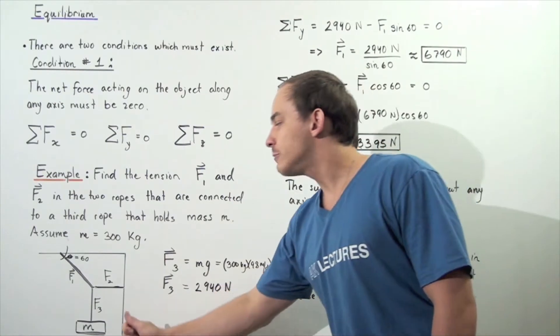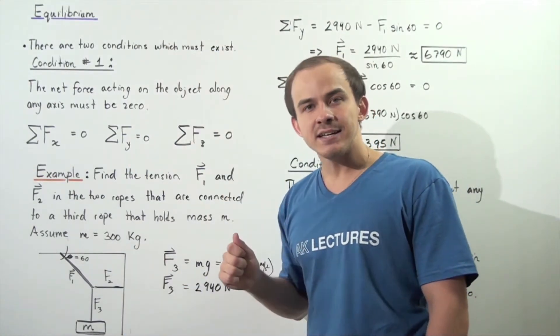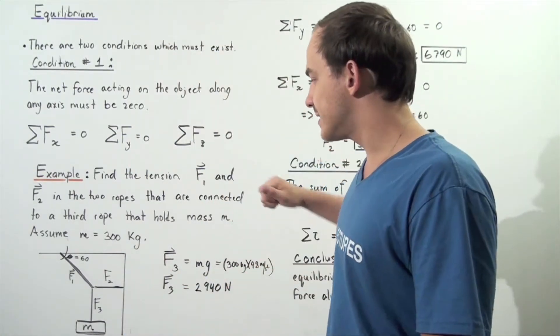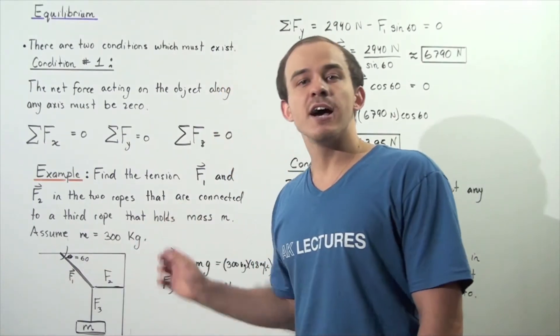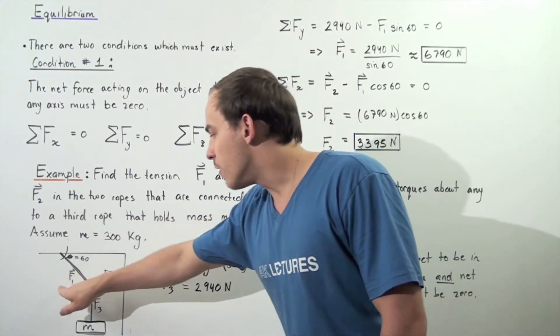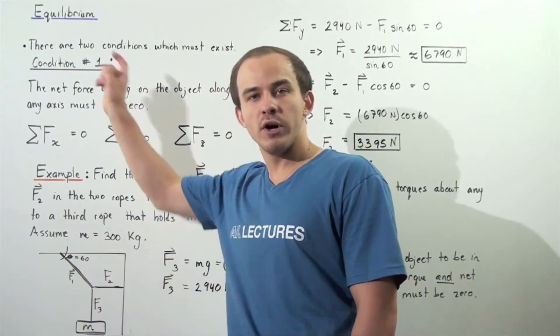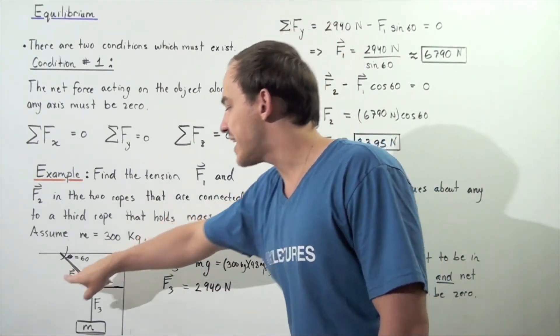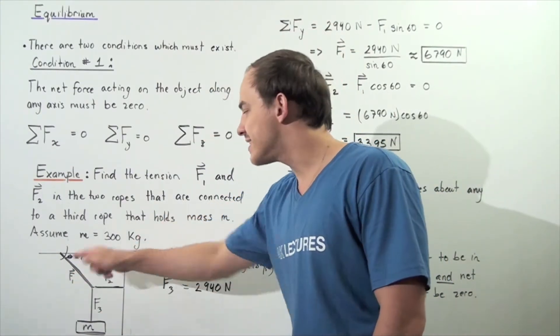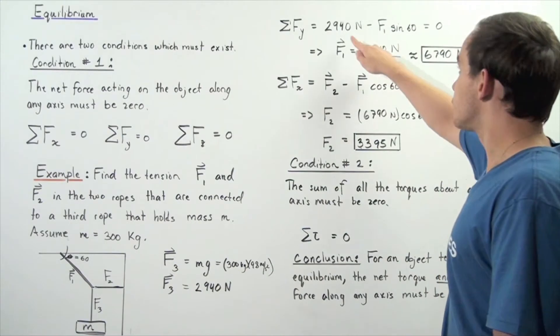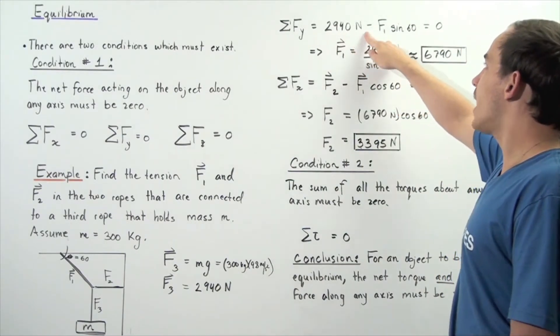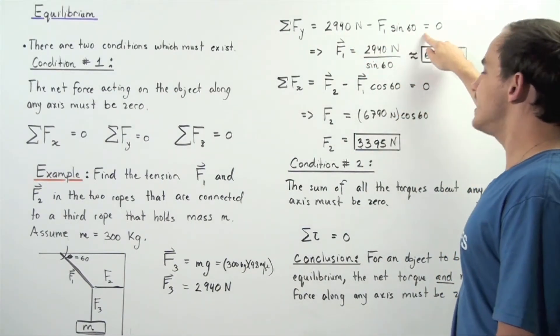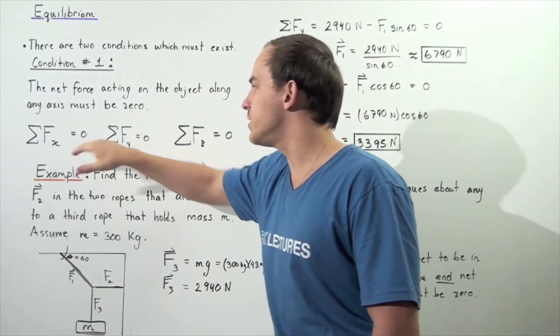And the other force that points upward in the negative direction along the x-axis is the component force of force 1 that points along the y-axis. So it's F1 multiplied by sine of the angle 60. So this quantity minus F1 sine 60 is equal to zero according to this equation.